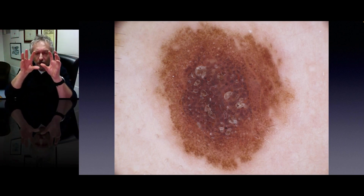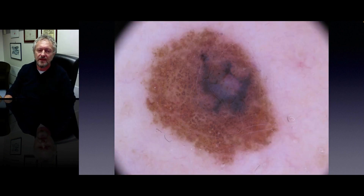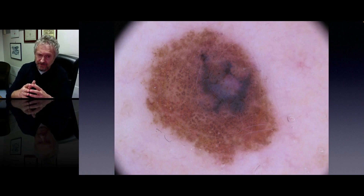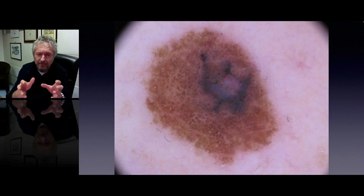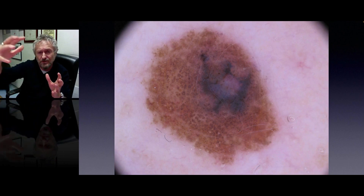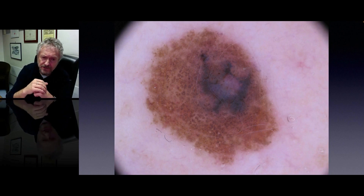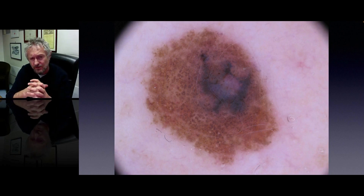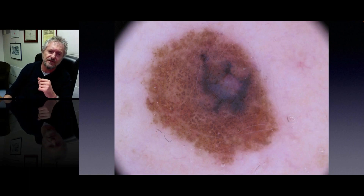Look instead at this lesion, which is showing basically the same structures — this kind of cobblestone pattern — but look how irregular the overall architecture of this lesion is. There is a bluish color on one side of the lesion, so this is definitely a much more worrisome lesion. This is actually a small congenital nevus where a melanoma was arising in between — a melanoma associated with a small congenital pre-existing nevus.